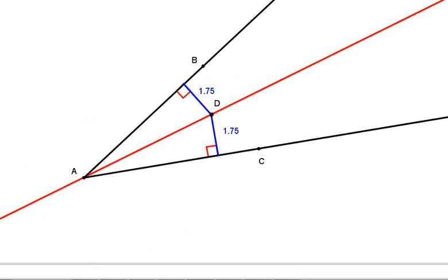And that's what we saw here, is that D, no matter where D is on this angle bisector, will be the same distance from the two sides.